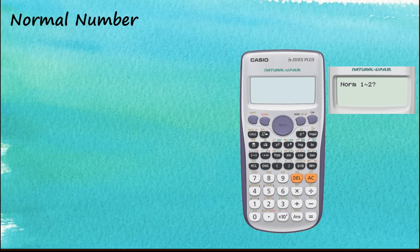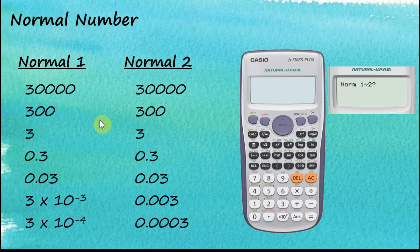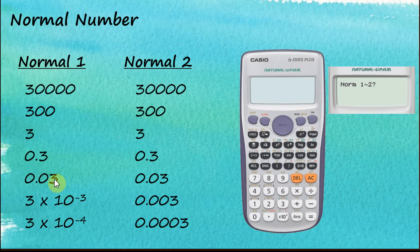The calculator will ask whether you want Normal 1 or Normal 2. Let's look at the difference. For large numbers like 30,303, both Normal 1 and Normal 2 give exactly the same display. However, for a number with many leading zeros such as 0.003, Normal 2 will still display it as a normal number, but Normal 1 will display it in scientific notation. So for Normal 1, any number less than 0.01 will be given in scientific notation.